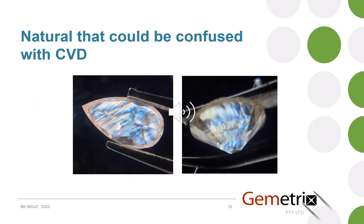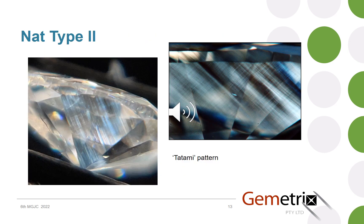There are some instances where the pattern could be confused with that of a CVD when in actual fact the stone is natural, particularly when some plastic deformation has taken place with browns or pinks which could be quite light in colour. Here are a couple of examples which show patterns that aren't clearly that of a natural diamond, but they are. Natural type 2s do pose a problem with fluorescence-type observations, but with cross-polars there tends to be a distinctive pattern of what might be called tatami — sort of cross-hatching in two directions — though the one on the left might look like CVD.